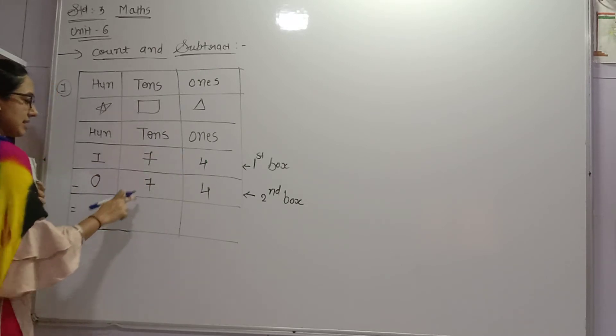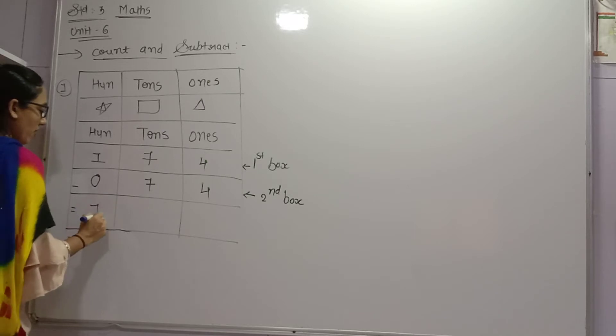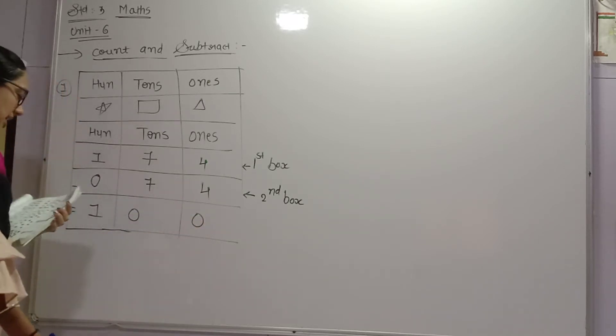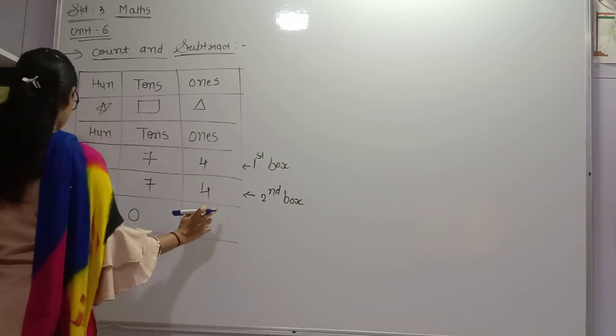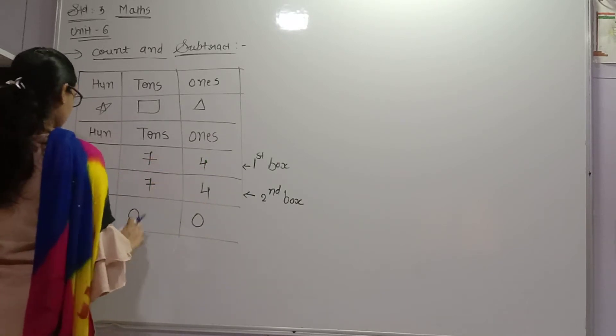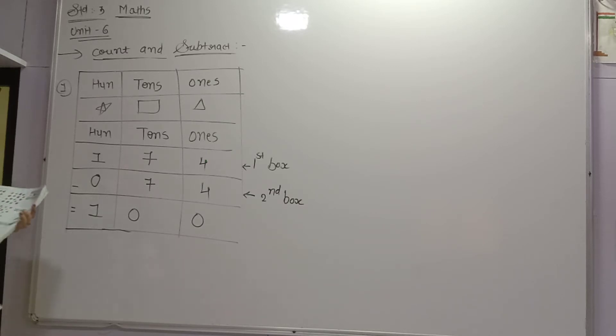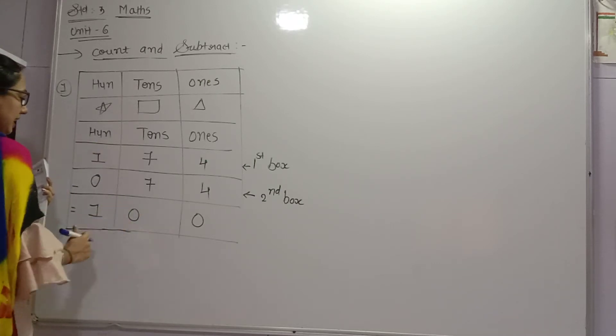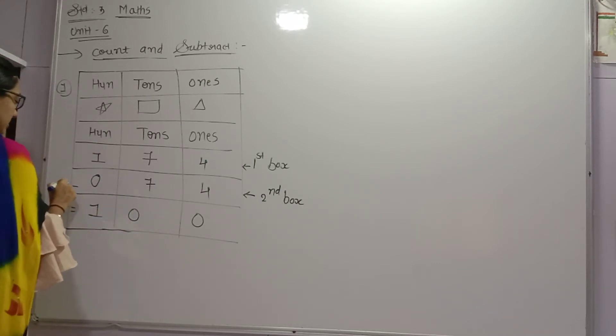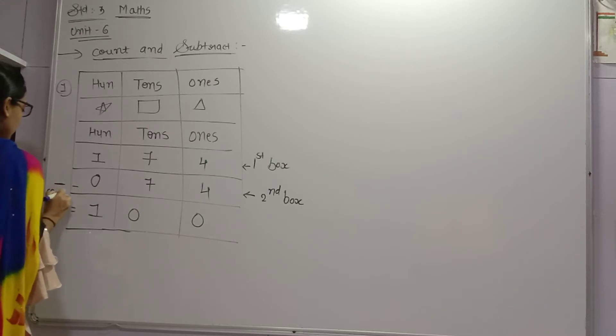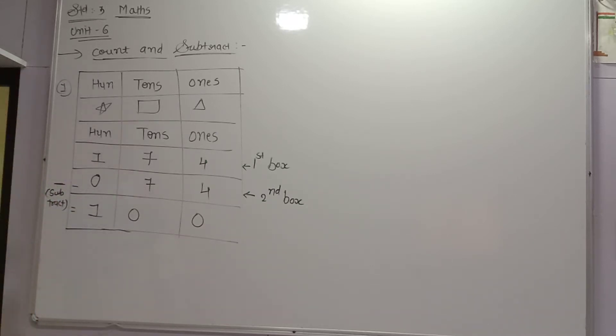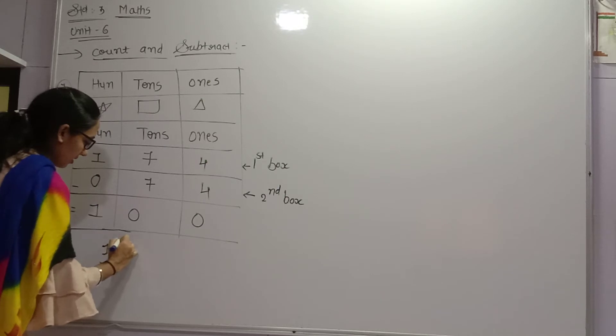So 174. And 74. Now what to do? Subtraction means minus. So 174 minus 74. 4 minus 4 is 0. 7 minus 7 is 0. 1 minus 0 is 1. So what is the answer? 100, right? This was the first one.